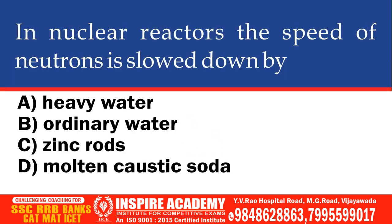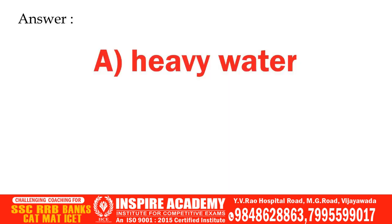In nuclear reactors, the speed of neutrons is slowed down by: heavy water, ordinary water, zinc rods, or caustic soda. And the correct answer is heavy water.